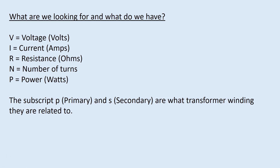Let's have a quick recap of the terminology and abbreviations we're using. When you start your question, write down what you have and break it down into primary and secondary winding. So you'd have Vp, Ip, Rp, Np, and Pp. V is voltage, I is current, R is resistance, N is the number of turns on the coil - so Np is the number of turns on the primary coil, Ns is the number of turns on the secondary coil. P is the power in watts. We identify the difference between primary and secondary winding using a subscript - a capital N with a little p or little s to indicate which part of the transformer we're working with.